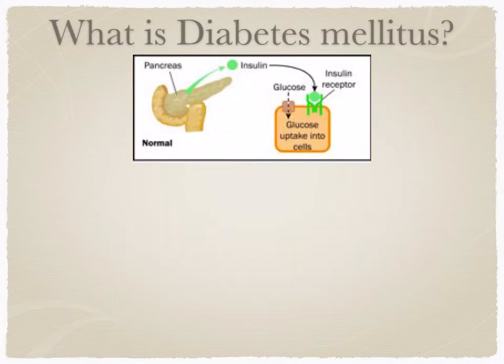If you have a look at this diagram, you can see a normal pancreas producing insulin. This insulin attaches to the insulin receptor on a cell surface, which means that glucose can be taken up by the cell. This is how blood glucose levels are controlled.